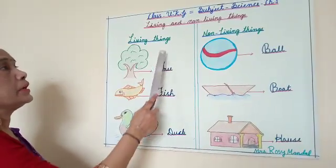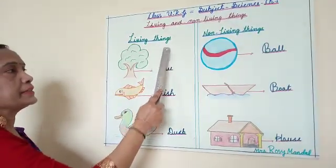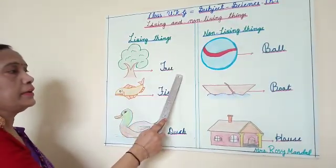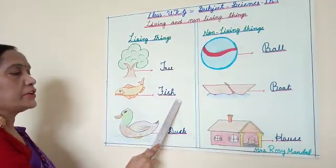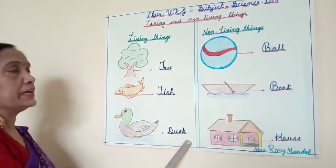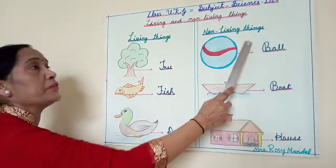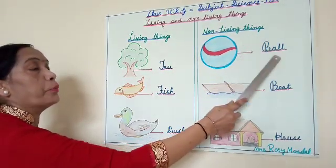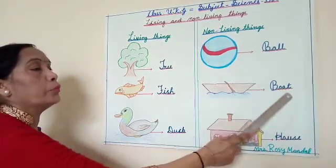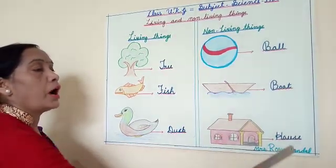Once again, I repeat. Living things: tree, fish, dog. Non-living things: ball, house.